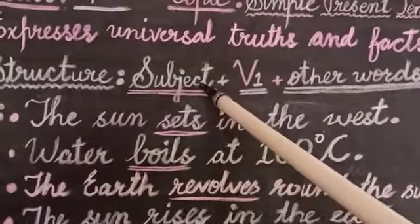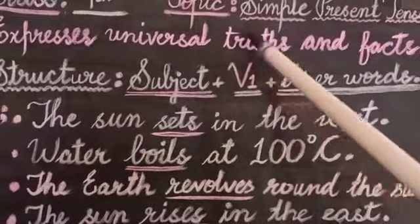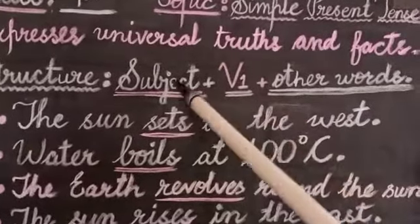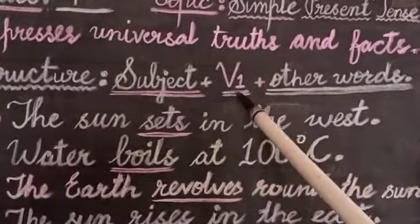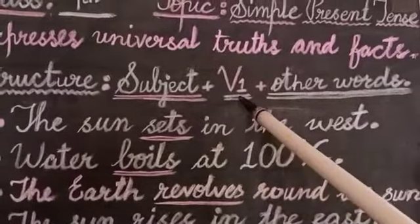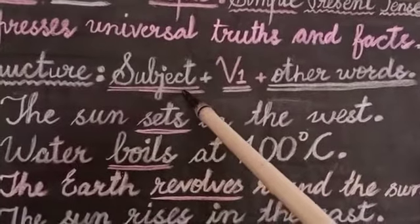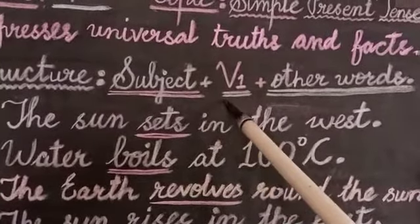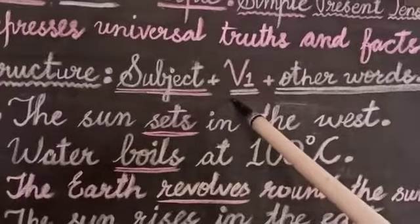With a singular subject you have to use the singular verb. With a plural subject you have to use the plural verb. And if the subject is 'I' or 'you', at that time you will also use the plural form of the verb.